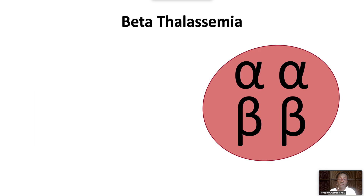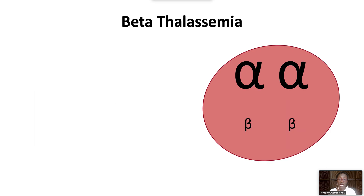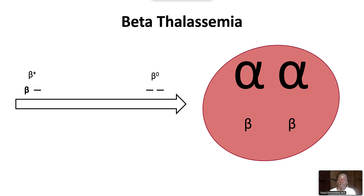In beta thalassemia, there is decreased or absent production of beta globin genes. There are hundreds of beta globin gene mutations, leading to varied clinical presentations. In general, beta plus thalassemia leads to mild reduction in beta chain synthesis, while beta zero thalassemia leads to complete absence of beta chain synthesis. Therefore, the spectrum of clinical disease can be mild, intermediate, or severe, previously classified as beta thalassemia minor, intermediate, or major.